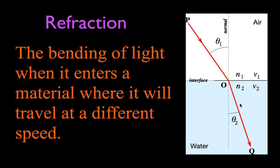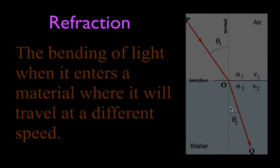Therefore, it's going to bend towards the normal line when it crosses that boundary. If you're not familiar with what the index of refraction is, I made a video for that — the link is in the upper right-hand corner of this video. But refraction is simply the bending of light when it enters a material where it will travel at a different speed, and you can see it's bent towards the normal line.